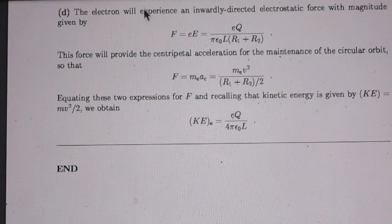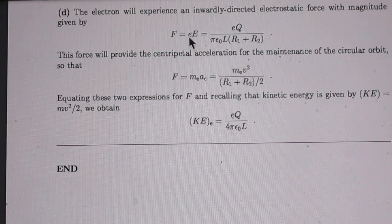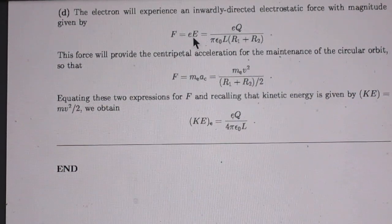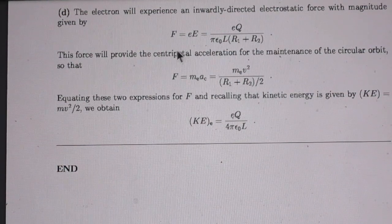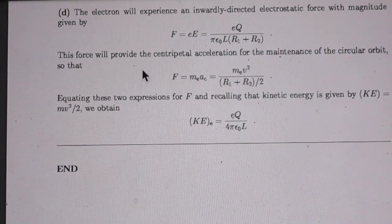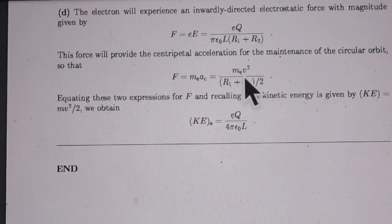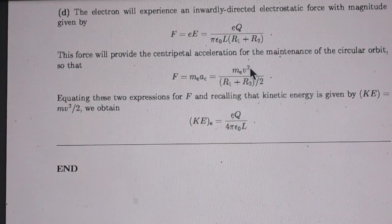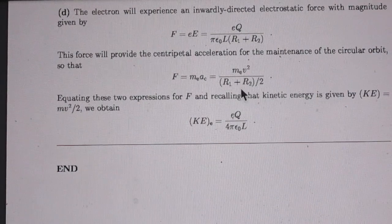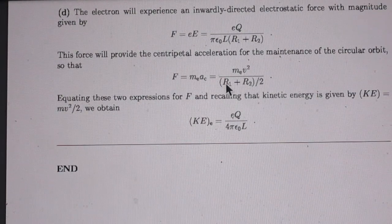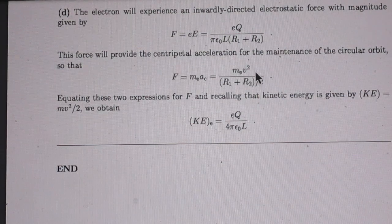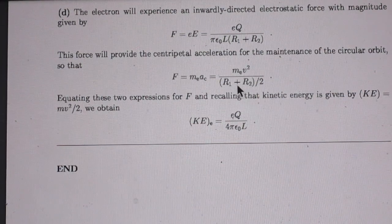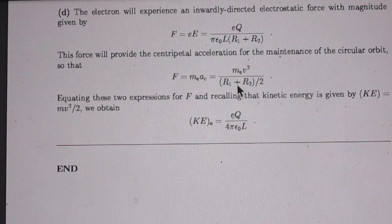Well, the force on that electron is obviously the charge of the electron times the electric field. And that's this. The centripetal force on that electron is mv² divided by the radius. And the radius R1 plus R2 divided by 2. mv² divided by r is the centripetal force on that electron.